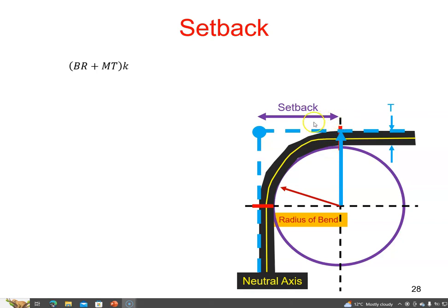There is the setback, and it's equal on both sides. I've measured that distance. That distance there is the bend radius, and this distance is the material thickness. So the setback is equal to the bend radius plus the material thickness.